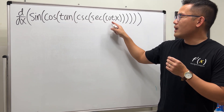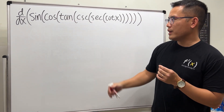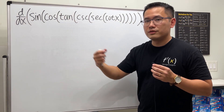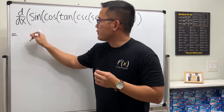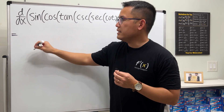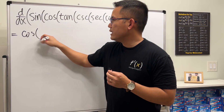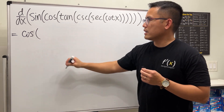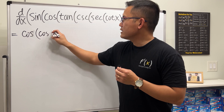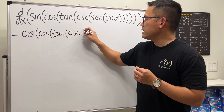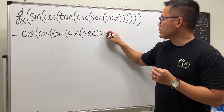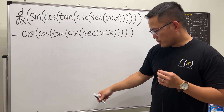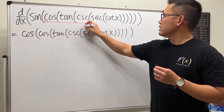We will use the chain rule five times, since these are all composite functions with only one x as the input. First, we differentiate the outer function, which is sine. The derivative of sine is cosine, so we write cosine of the rest — cosine of tangent of cosecant of secant of cotangent of x — that's five layers.